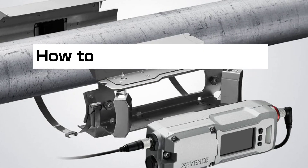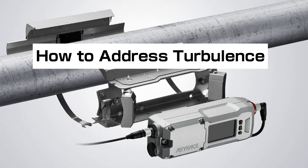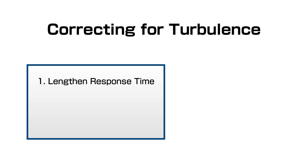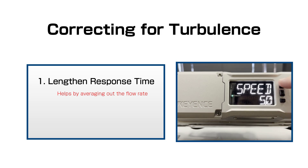Now that we know some typical reasons why an ultrasonic clamp-on flow meter might become inaccurate, let's see how the FDR series addresses these concerns. For issues with turbulence, there are two actions to take. The first is to increase the response time on the sensor, which will help it average out what it sees inside the pipe — perfect for making the flow rate reading steady when flow is turbulent. You can find the response time setting by pressing and holding the mode key, then briefly pressing mode until you see 'speed', which can be adjusted with the up or down arrows. A longer response time will average out the flow rate reading more than a shorter one, which is ideal for rapid turbulence.